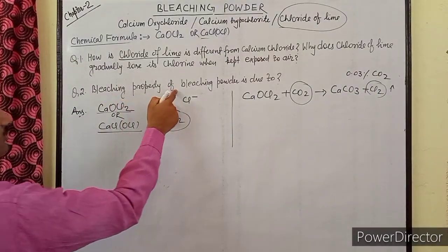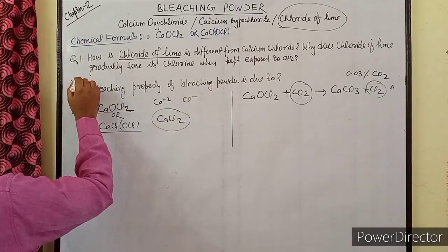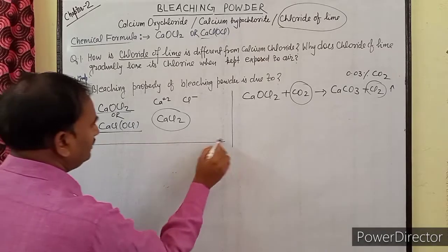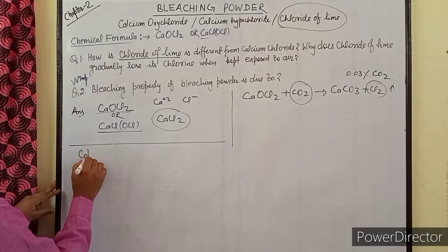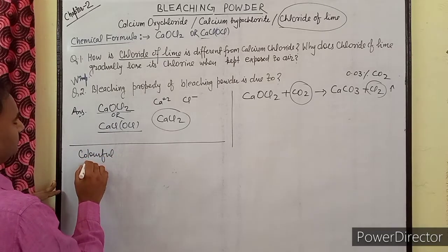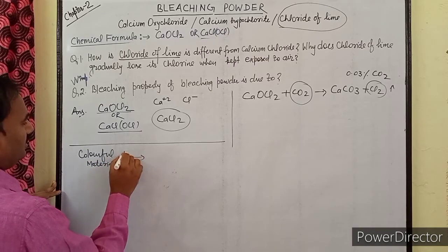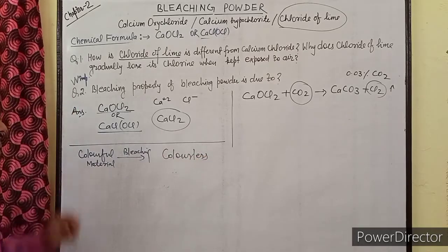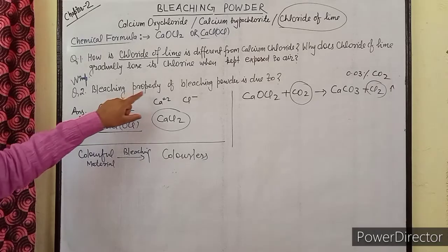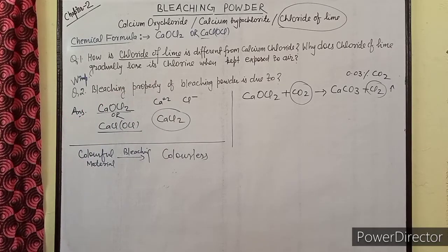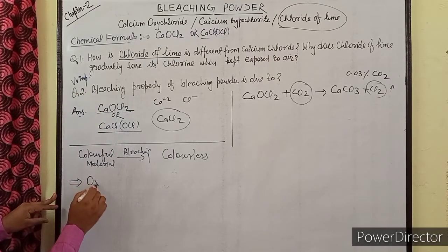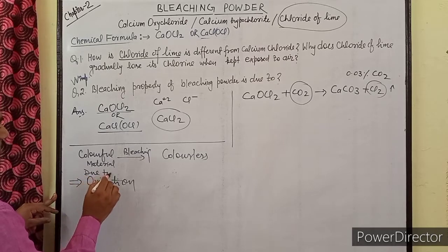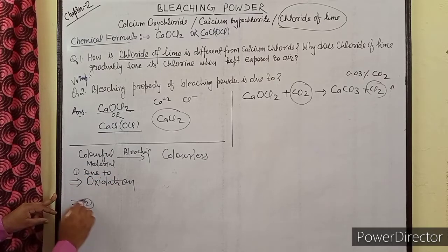Next question: The bleaching property of bleaching powder is due to what? यह बहुत important question है। Bleaching का मतलब होता है किसी भी colorful material को colorless कर देना। Bleaching powder की जो bleaching property है वो oxidation के कारण होती है। और दूसरा important point यह है कि यह permanent होता है।